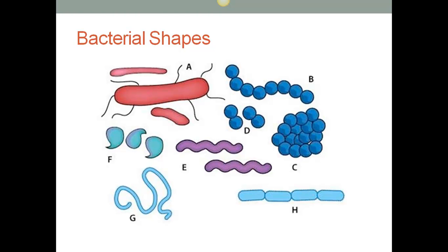The first shape is the coccus, which is an oval or spherical bacterium. Within that category there is the diplococcus, which is a pair of cocci; streptococcus, which is a chain; staphylococcus, which is more irregular; and sarcina, which is a cube arrangement. Then there is the rod-shaped bacillus and a spiral form.